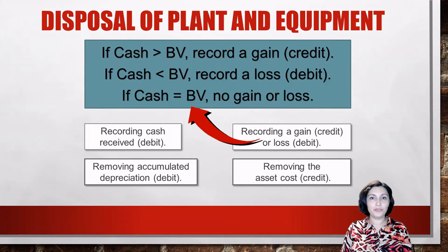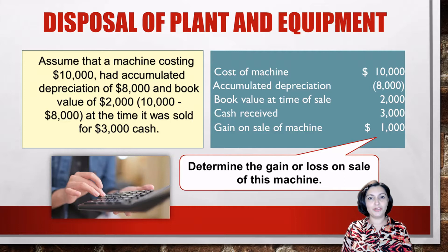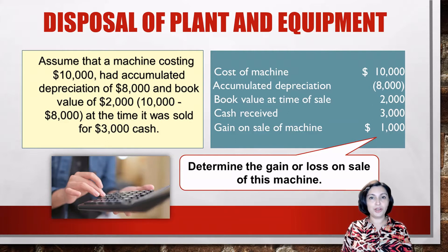Now let's look at a specific example of the disposal of a plant asset. Assume that a machine costing $10,000 had accumulated depreciation of $8,000 and a book value of $2,000, which is $10,000 minus $8,000. It was sold for $3,000 cash. To determine the gain or loss on sale, we compare the asset's book value to the proceeds from the disposal. In our case, the cash received was more than the book value, so we have a gain on the sale of this machine of $1,000.